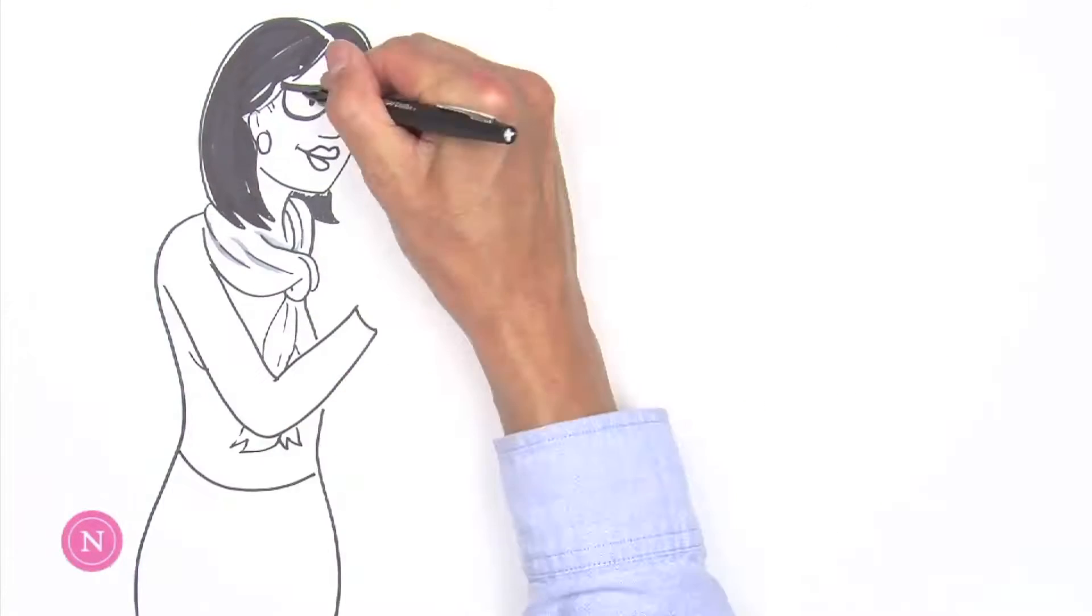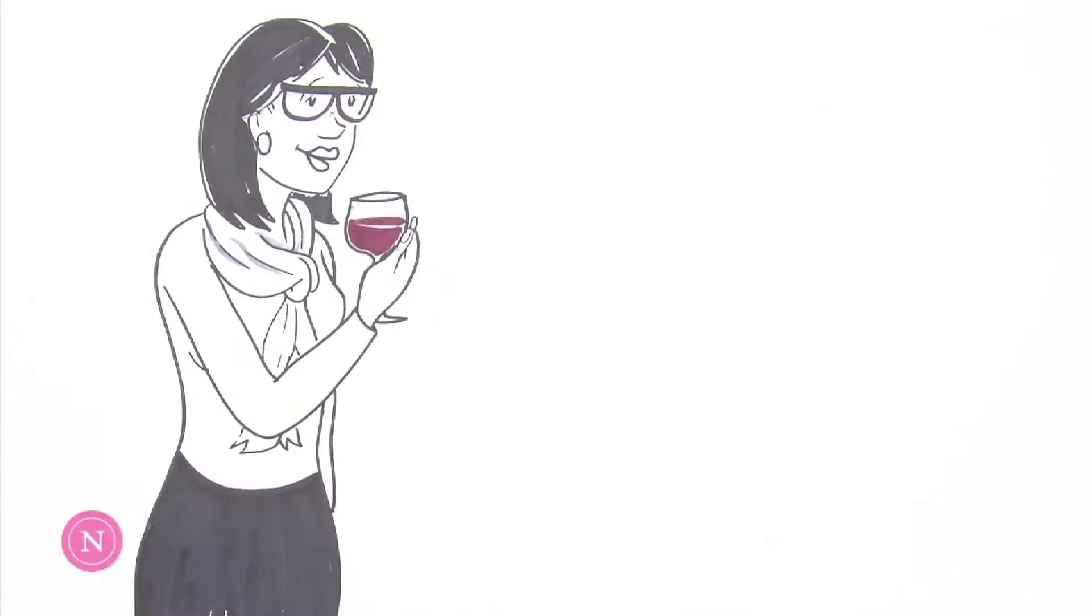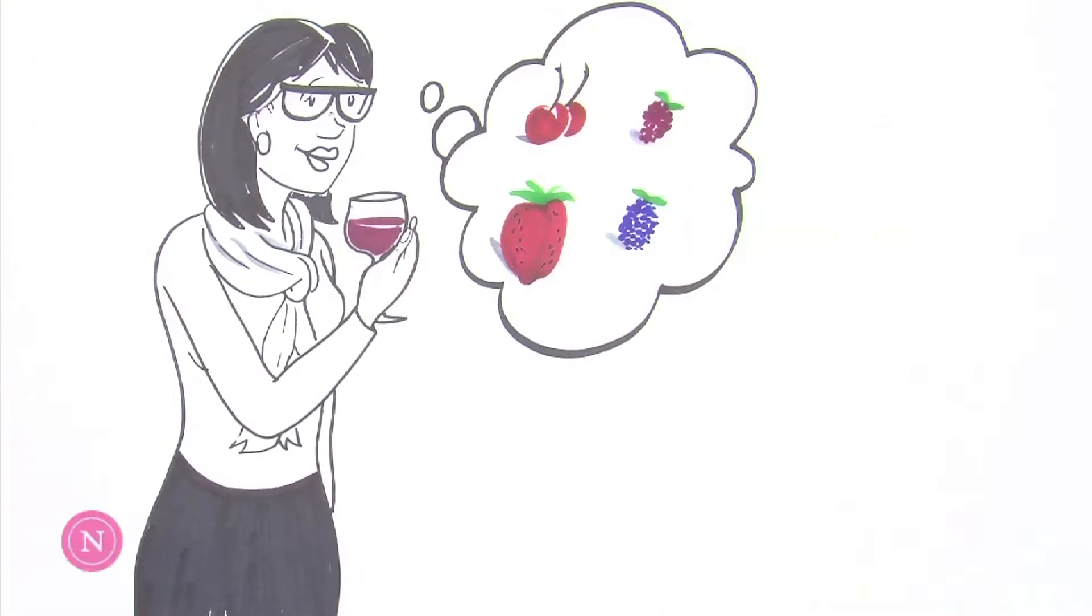From grapes to glass, oxygen directly impacts how a wine develops, both chemically and in terms of smell, taste, structure, and color.